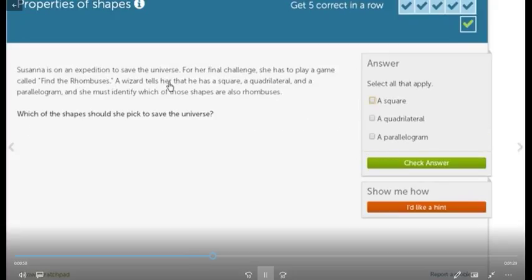There is a question now about an expedition to save the universe. The question involves rhombus, quadrilateral, and parallelogram. She must identify which of these shapes are also rhombuses. I have three types: squares, quadrilateral, and parallelogram.